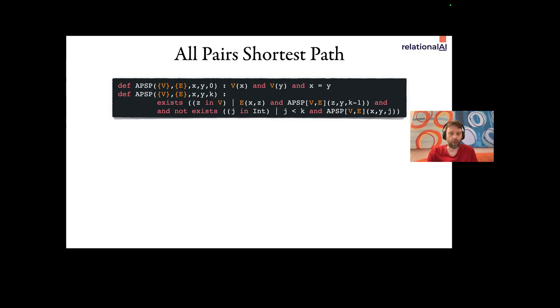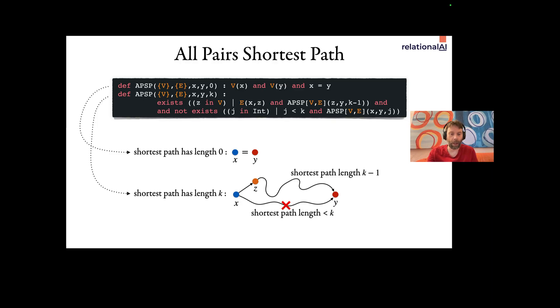Let's look at all pairs' shortest paths. So we have a graph with vertices v and edges e. The first rule here is saying that the shortest path from x to y has length 0 if x equals y. Okay, and the second rule says that the shortest path from x to y has length k if there is an out neighbor z of x such that the shortest path from z to y has length k minus 1, and then this last line in the code checks that there is no path from x to y that's shorter than k. And that's what shortest path means, right? This is declarative.